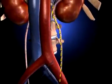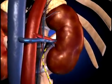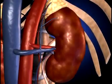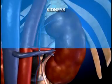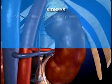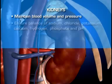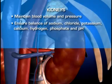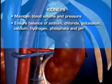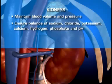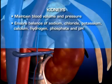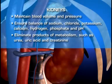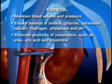The kidneys also selectively reabsorb those substances that are needed to maintain the normal composition of the blood. By adjusting blood composition, the kidneys are able to maintain blood volume and pressure, ensure the proper balance of sodium, chloride, potassium, calcium, hydrogen, phosphate, and pH, and eliminate products of metabolism such as urea, uric acid, and creatinine.